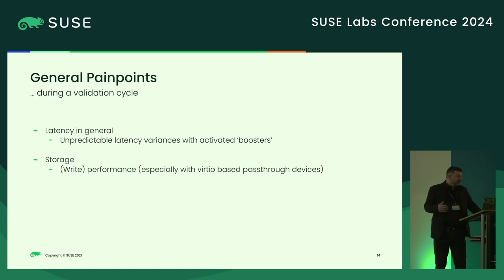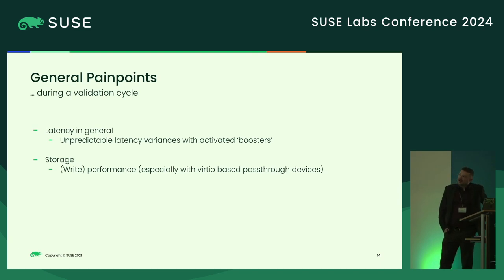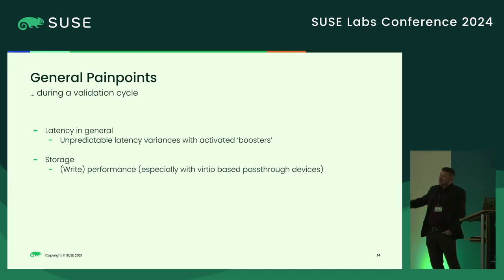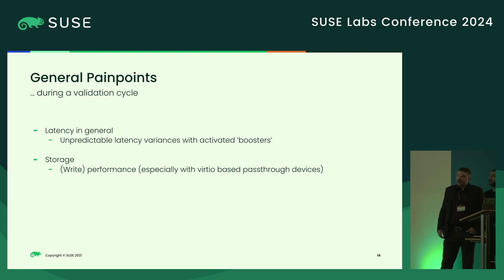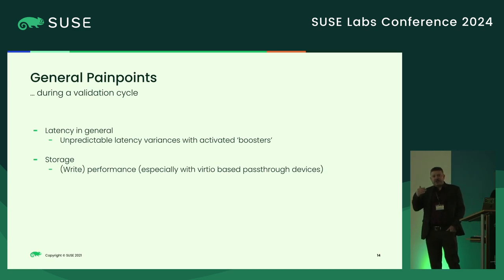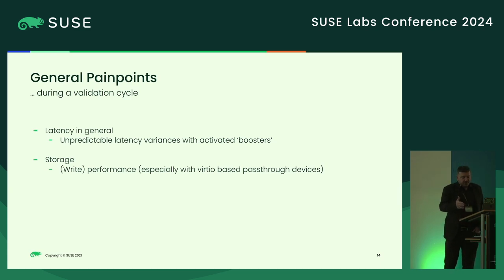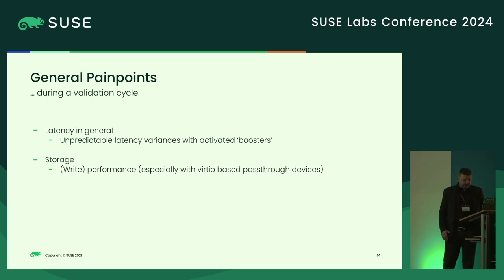Current pain points. Already in the last validation cycles, we experienced problems with latency in general, leading to, for example, having to deactivate everything that would count as a booster, like turbo mode. Because latency was unpredictable, and since we are measuring the performance deviation between a bare metal system and a virtual machine, unpredictable latency was a big problem as it killed all our audit results.